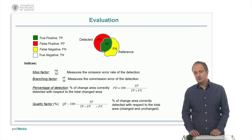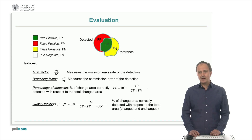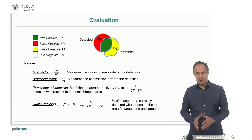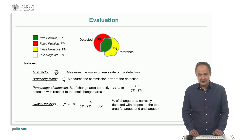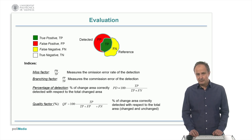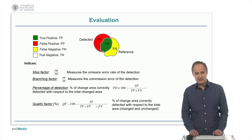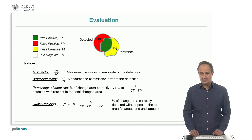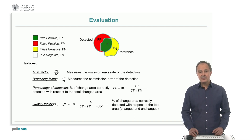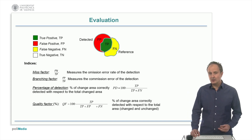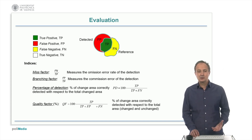In change detection applications, the evaluation of the methods can be addressed by computing four indices based on comparing true positive, false positive, false negative, and true negative values, which may be obtained by comparing the detected changes and the actual changes in sample testing areas. Thus, the miss factor measures the omission error rate of the detection, the branching factor the commission error, the percentage of detection the proportion of change correctly detected with respect to the change area, and the quality factor measures the proportion of change correctly detected with respect to the total area.